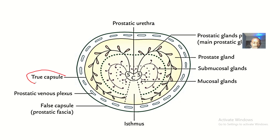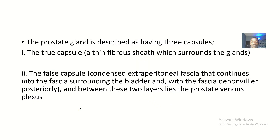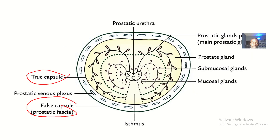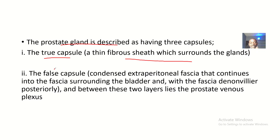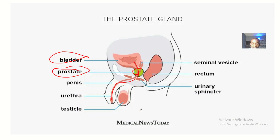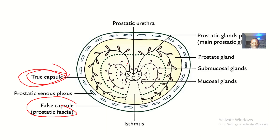Looking from up, we have the true capsule and we have the false capsule. Then there's a third capsule that is a pathological capsule. The prostate gland is described as having three capsules. The true capsule is a thin fibrous sheet which surrounds the gland. Then we have the false capsule, which is a condensed extraperitoneal fascia that continues into the fascia surrounding the bladder and with the Denonvilliers' fascia posteriorly. Between these two capsules lies the prostatic venous plexus.